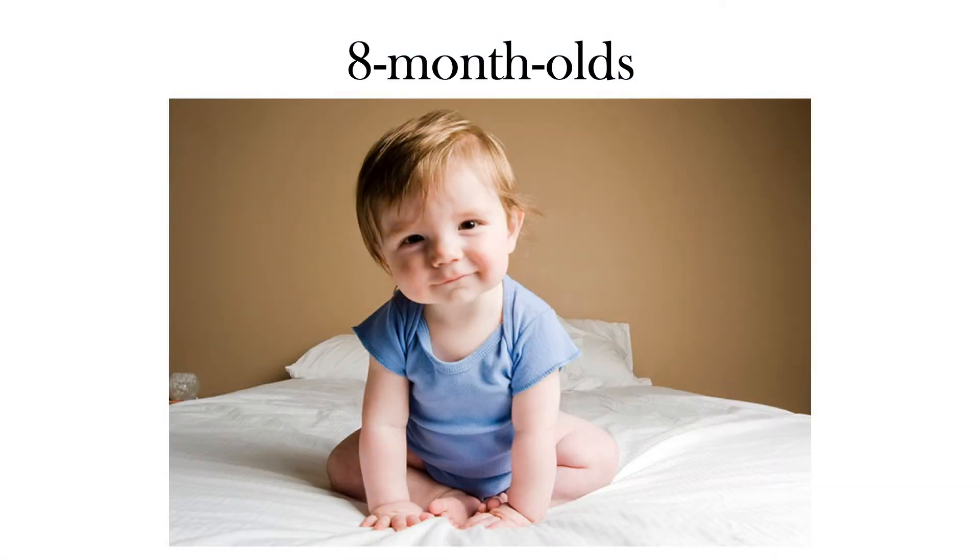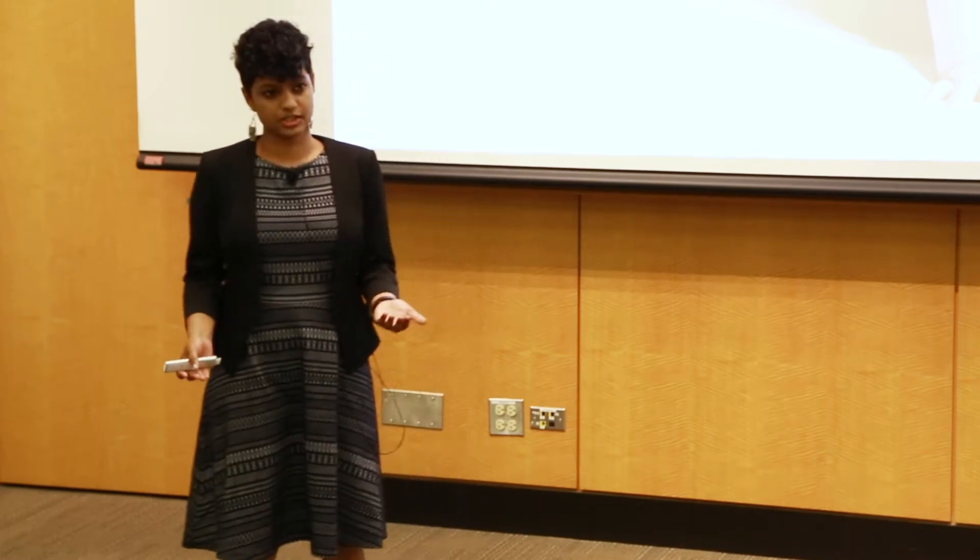So we turn to babies. At eight months of age, babies have not yet started to speak or communicate in a verbal language. So this gave us the perfect opportunity to answer the question, is relational comparison and abstraction a uniquely human one, or is it the fact that it arises from our ability to communicate in language?